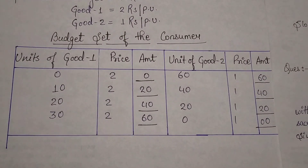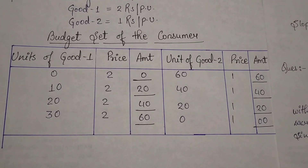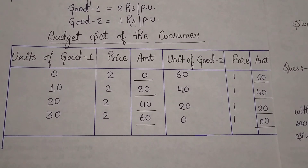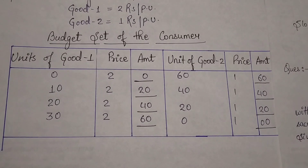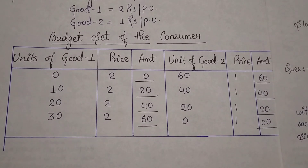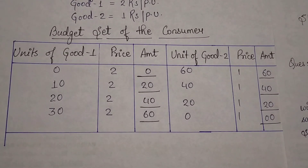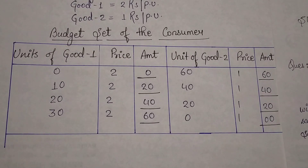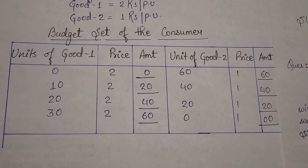You might say that in indifference curve we assumed two commodities consumed, and in budget we also assume two commodities consumed - what is the difference? One notable point is that in indifference curve we assumed two commodities, but here there is a difference in the constraint.